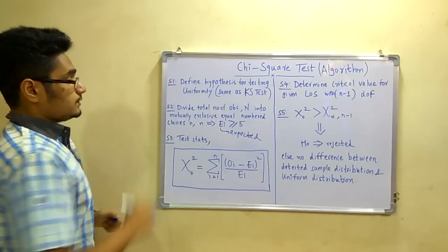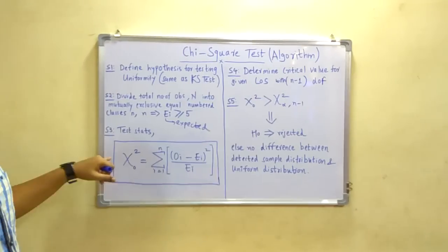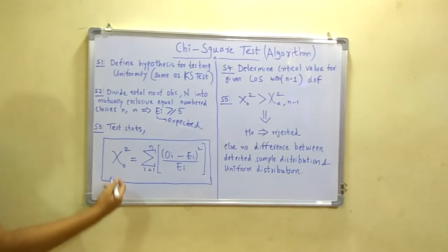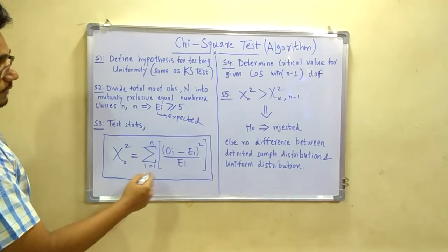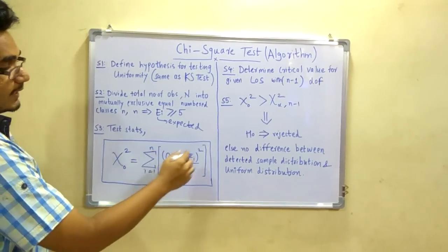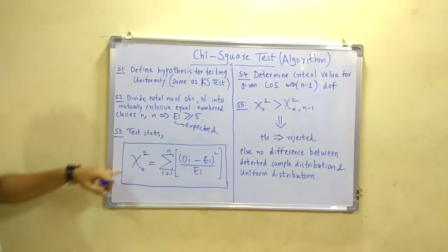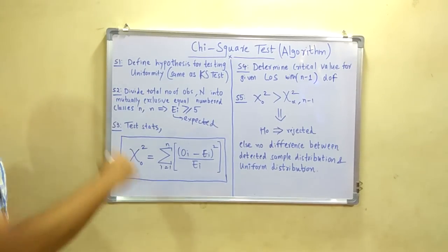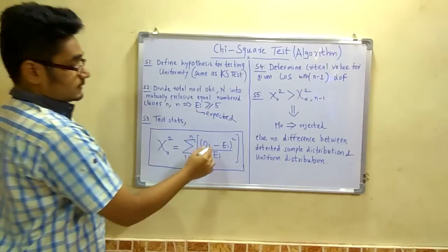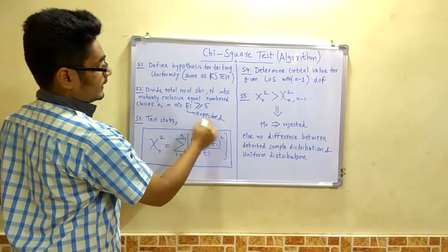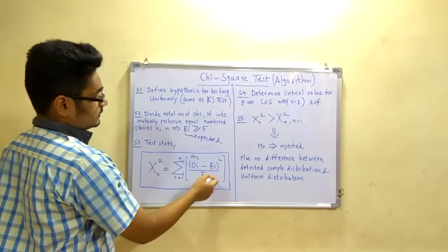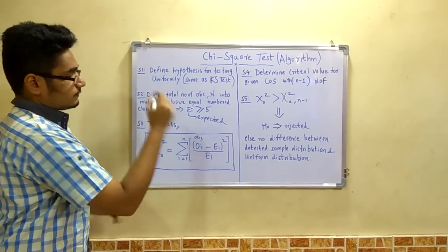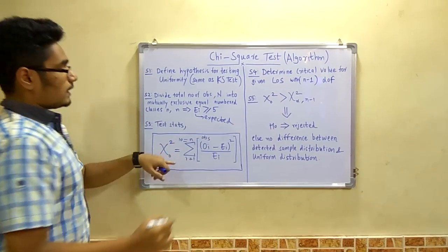Next, you have to compute the test statistics. This is the formula for computing the test statistics for chi-square test: chi-square zero equals summation of i from 1 to n of (oi minus ei) whole square upon ei. This chi-square test is the approximate chi-square distribution that you are going to determine after you run this algorithm. oi is the observed frequency, ei is the expected one. You compute this for n; if 10 are there, then you will run from 1 to 10.